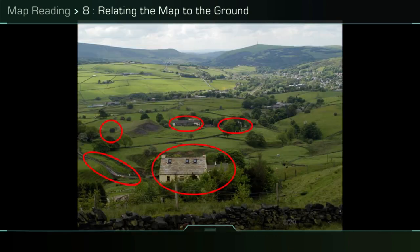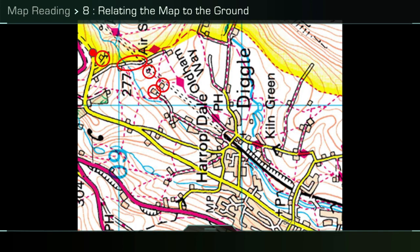Proximity: how close things are, or their proximity to a more obvious feature, can also assist in identifying a feature you are more interested in. For example, to figure out where the kink in the road is, circled to the left of the picture, we know it is close to the three circled buildings. From that, we can identify a likely kink in the road in close proximity to three buildings on the map.